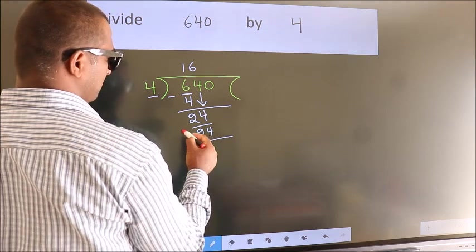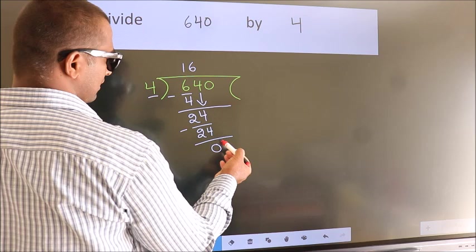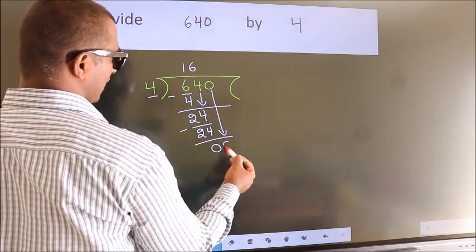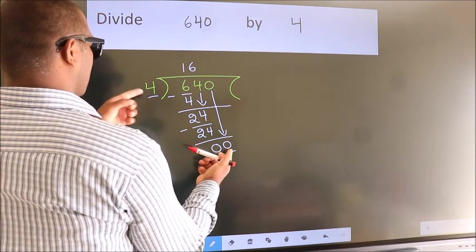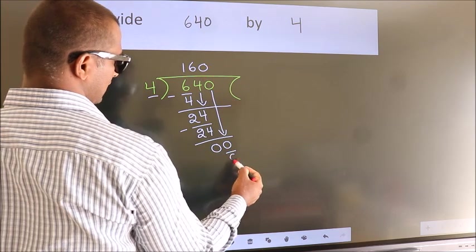Now we subtract, we get 0. After this, bring down the next number, so 0 down, so 0. When do we get 0? In the 4 table, 4 times 0 is 0.